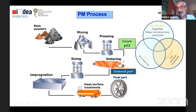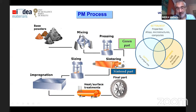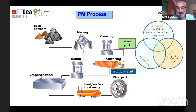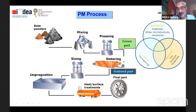The green part must have enough green strength to be manipulated in order to move the parts from the press to the sintering furnace. Then we have the sintering process, in which we reach the sintered part. After sintering, many times the part is ready to be sent to the customer, but many other times we have to do some post-sintering treatments to have the final part.